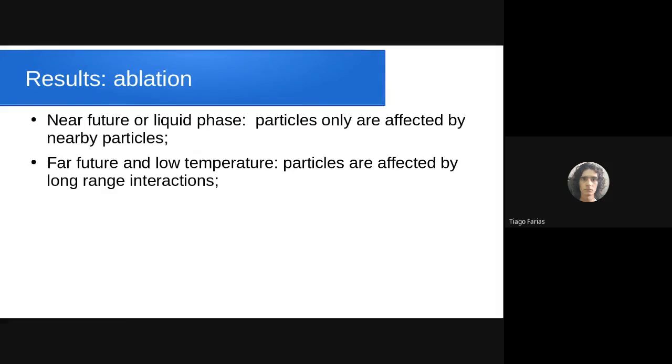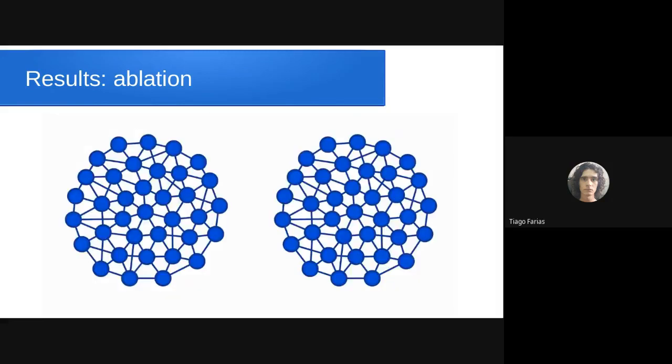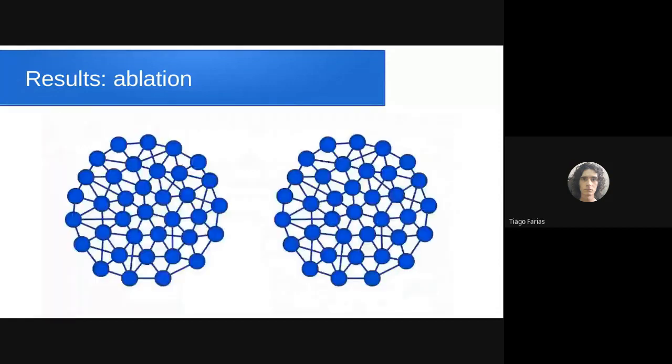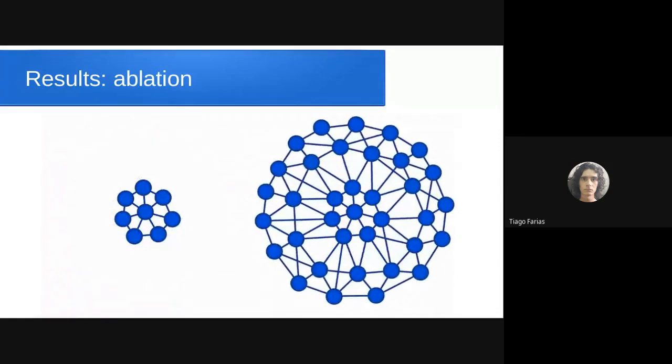What they inform is that in the near future or liquid phase, particles are only affected by nearby particles. They know this because you can obtain this information by comparing the predicted mobility of the neural network from the ground truth data obtained by simulating. In far future and low temperatures where there is the glass transition, particles are affected by longer range interactions. So if you cut the network when in long range interactions for far future and low temperature, the mobility decreases in the prediction, so you have more errors.